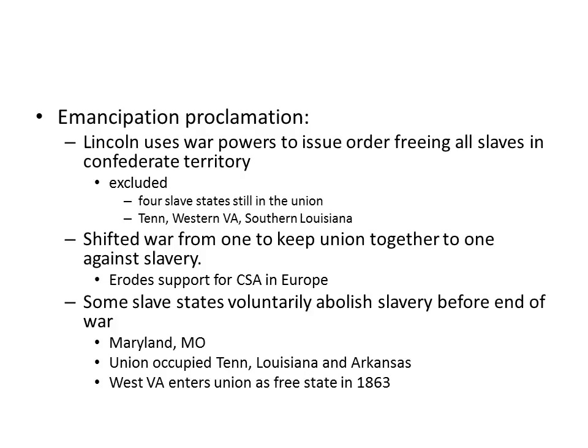Lincoln is going to use the war powers to issue the Emancipation Proclamation, which is an order freeing all slaves in Confederate territory. That's going to exclude the four slave states that are in the Union, as well as Tennessee, Western Virginia, and Southern Louisiana, which are all under Union occupation. But it's going to shift the war from one to keep the Union together to one against slavery, and this is a really symbolic act.